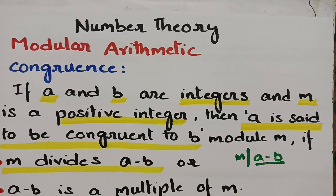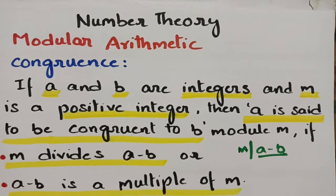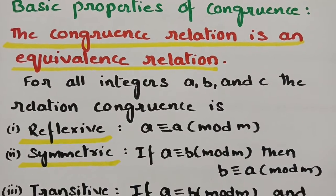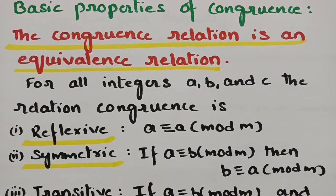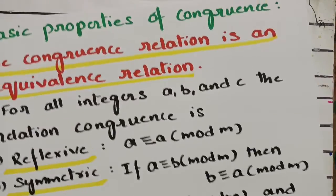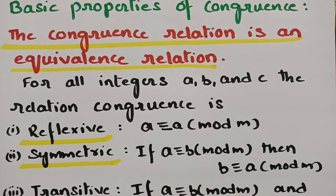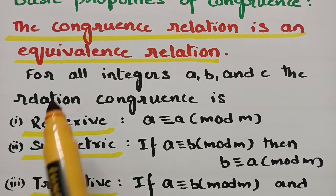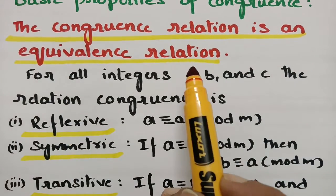There are a few properties related to congruence. The basic and most important property is that the congruence relation is an equivalence relation. For all integers A, B, and C, the relation holds as congruence.